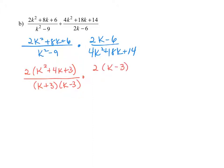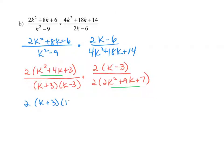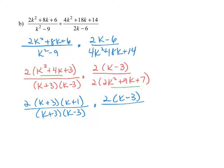The numerator of the second expression has a common factor of 2, giving 2 times the quantity k minus 3. The denominator has a common factor of 2 as well, leaving 2k squared plus 9k plus 7. We still need to factor these trinomials further. The trinomial k squared plus 4k plus 3 factors into k plus 3 and k plus 1. The trinomial 2k squared plus 9k plus 7 factors into 2k plus 7 and k plus 1. You can review the AC method for factoring trinomials from chapter 6.